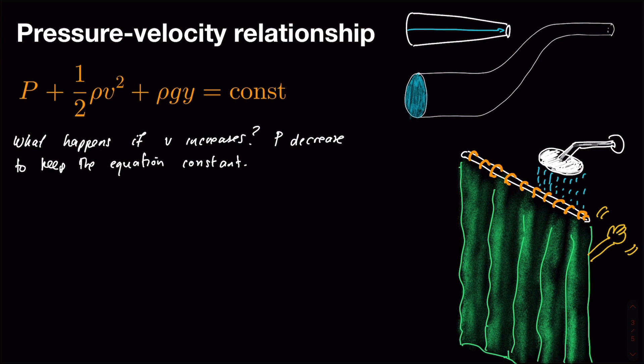So the answer is that P has to decrease to keep the equation constant. And same thing happens in reverse. If V were to decrease, if our fluid were to slow down because our pipe got wider, for example, then our pressure would increase.